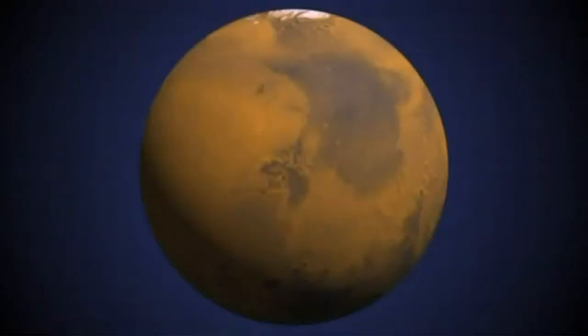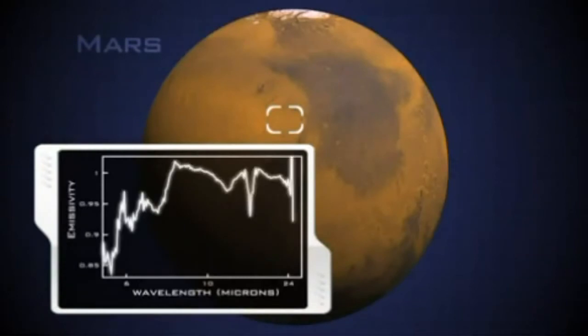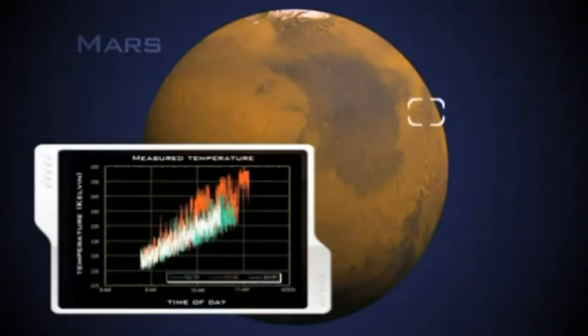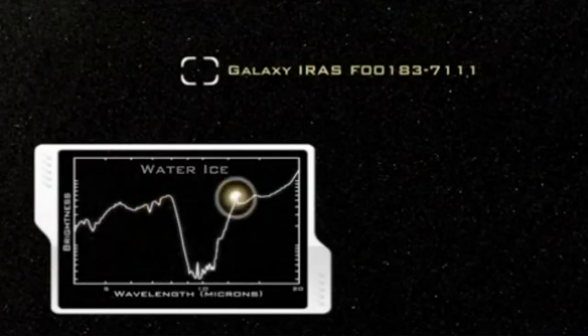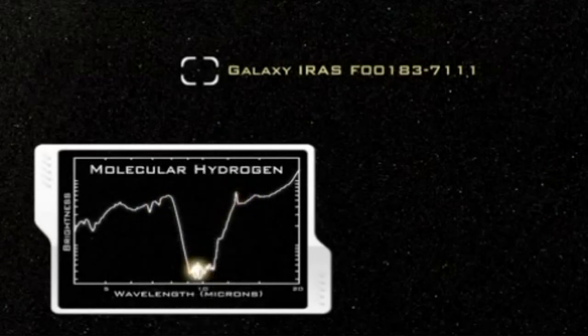Characteristic patterns like fingerprints within the spectra allow astronomers to identify an object's chemical composition and to determine such physical properties as temperature and density. NASA's Spitzer Space Telescope observed the presence of water and organic molecules in a galaxy 3.2 billion light years away.